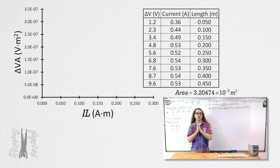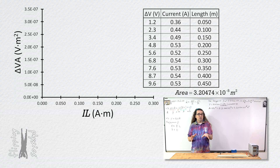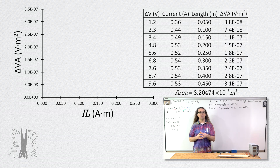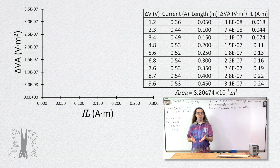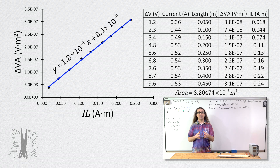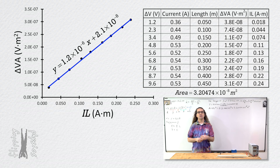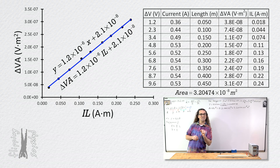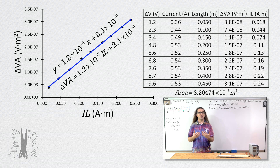Now let's complete our data table and graph. We already have values for electric potential difference, current, length and cross-sectional area. All we need to do is multiply electric potential difference times cross-sectional area to get the data for the y-axis and multiply current times length to get the data for the x-axis. Then we plot that information, add our straight best fit line and an equation for it. The equation we get is y equals 1.2 times 10 to the negative 6 times x plus 2.1 times 10 to the negative 8. That means the resistivity we get for nichrome is 1.2 times 10 to the negative 6 ohm meters.